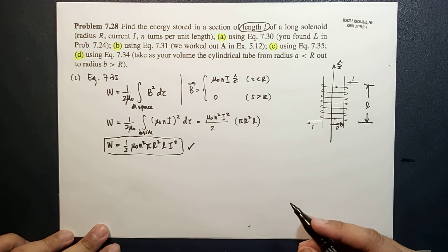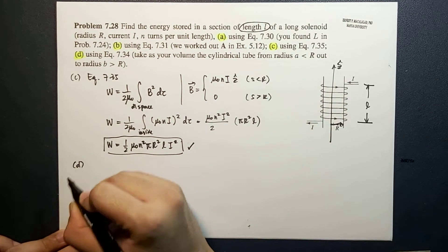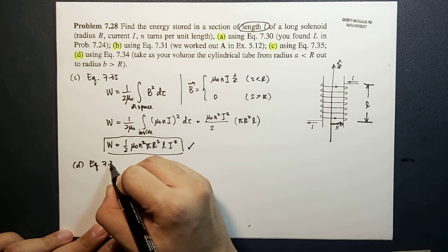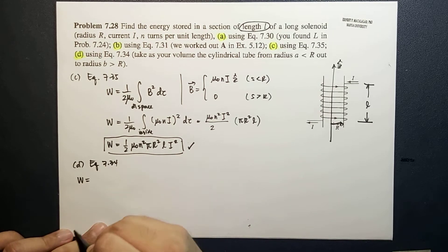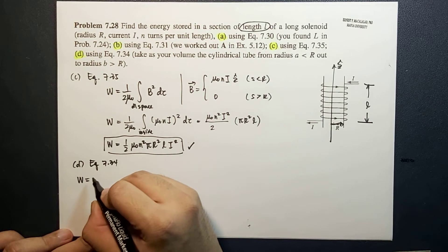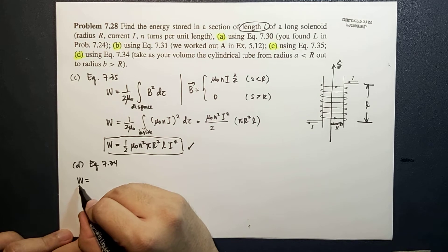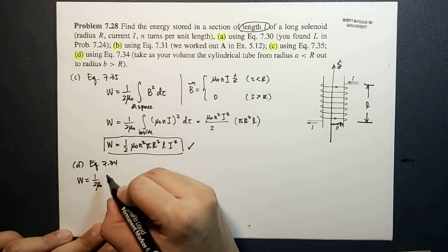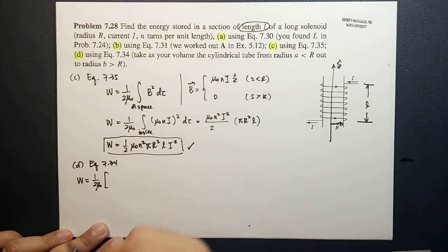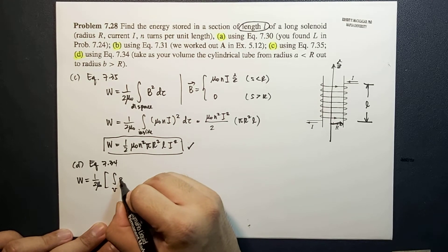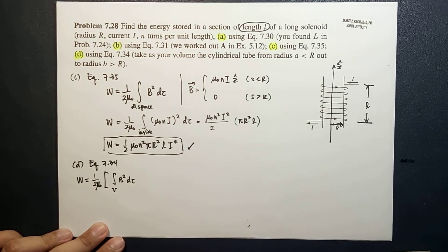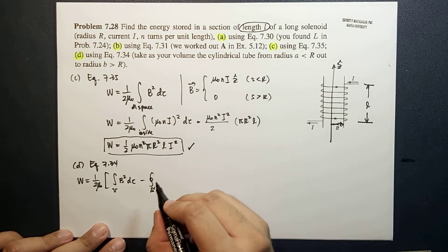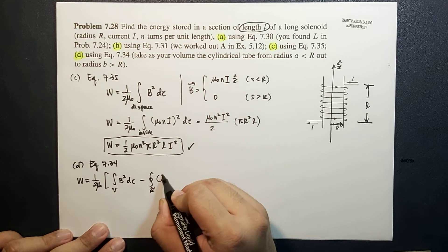The difficult part is letter D, and this is your problem set. We want to use equation 7.34. Equation 7.34 gives the stored energy W equal to one over two mu-naught times the sum of a volume integral of B squared minus a closed surface integral of A cross B dot da.